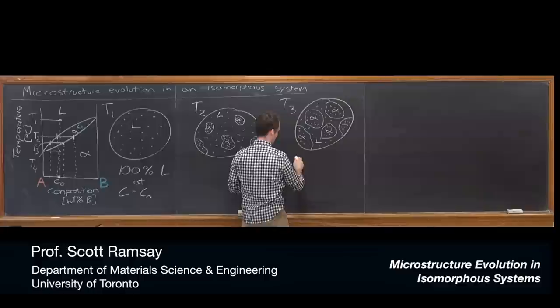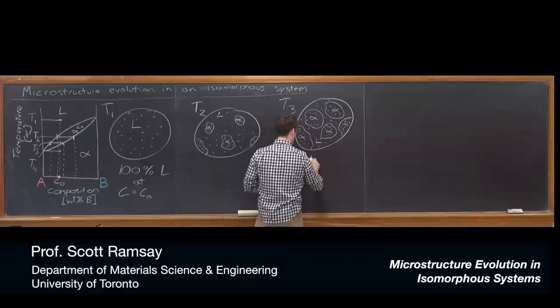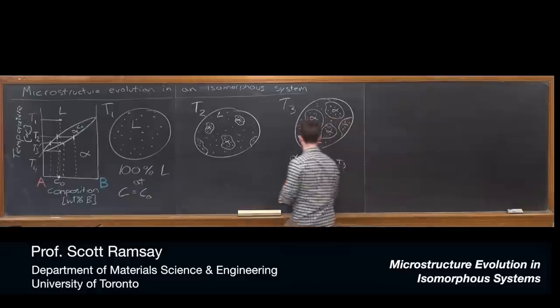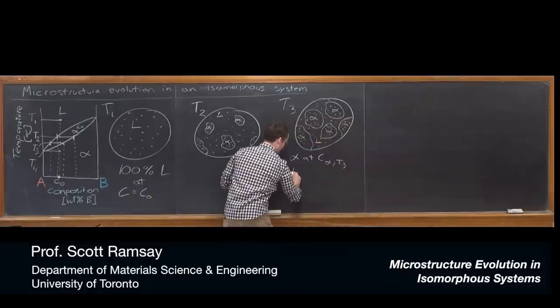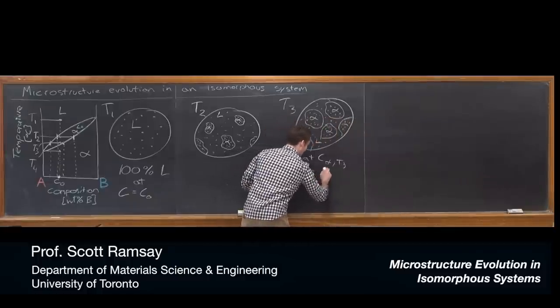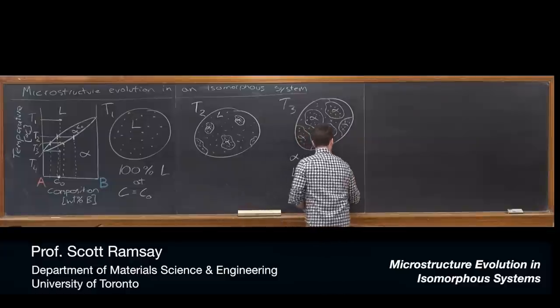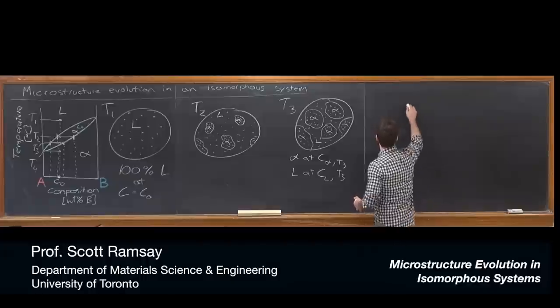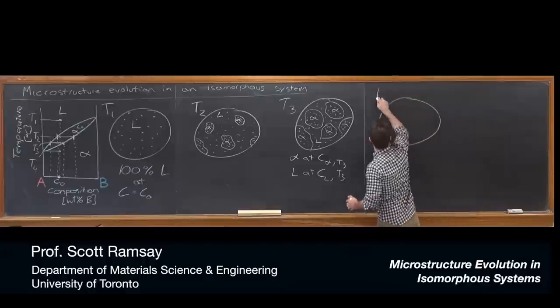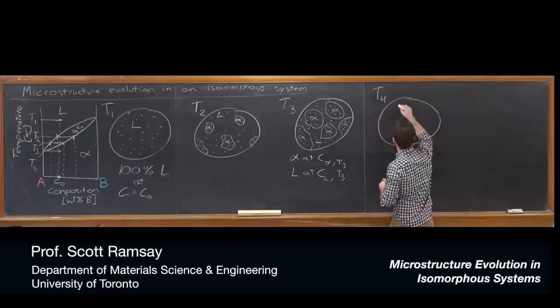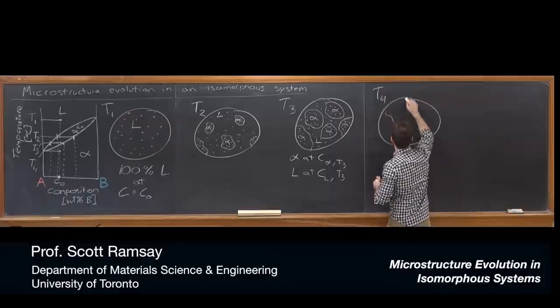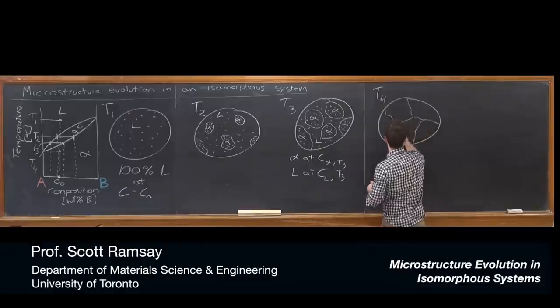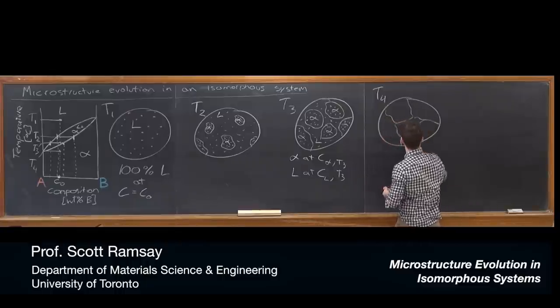So I could say now it's alpha at composition C alpha corresponding to the tie line drawn at T3, and it's going to be liquid at composition C liquid corresponding to the composition at T3. And so then finally, T4, those same particles have just gotten big enough now that they've run into each other, essentially, and you might have something that looks like this,